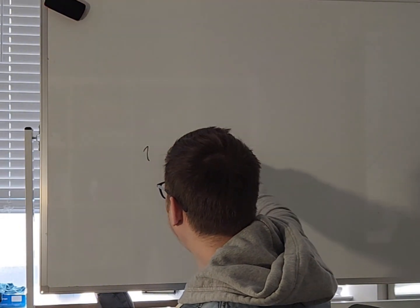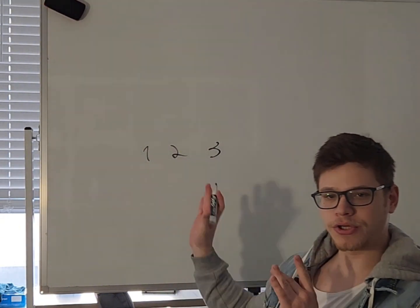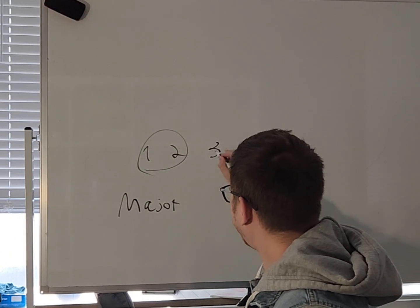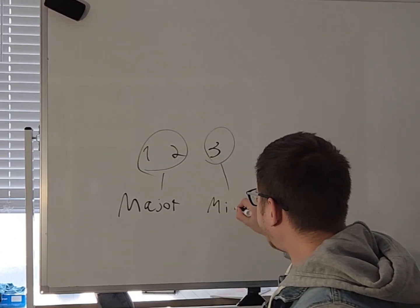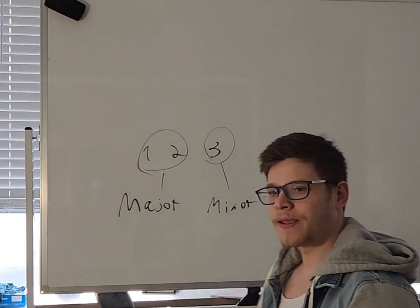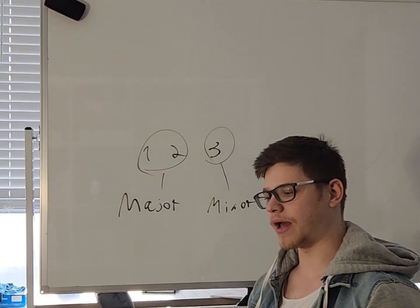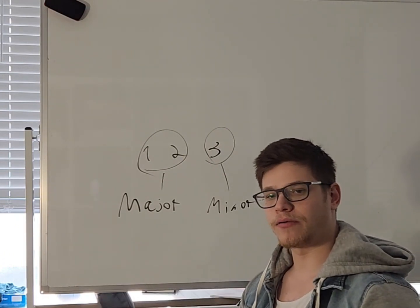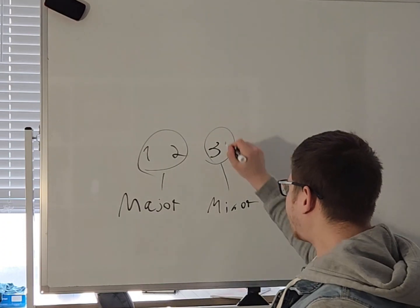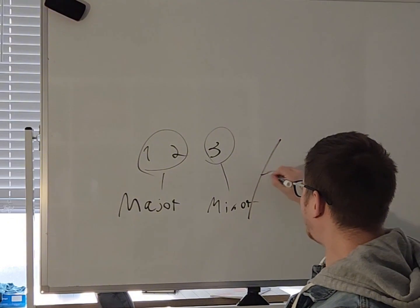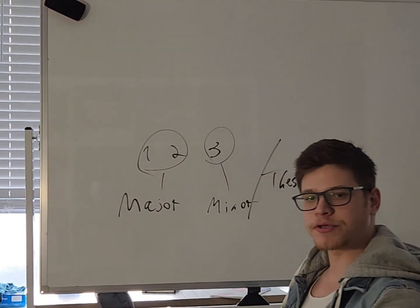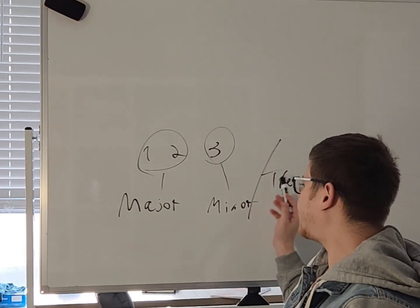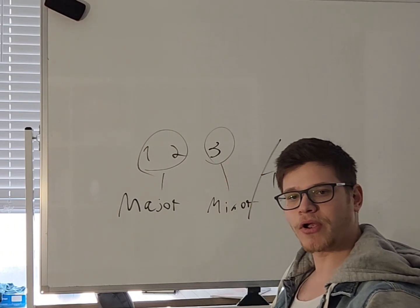There are basically three people on your oral committee, and you get to choose who they are. Two of them are going to be in your major area, and the other one is going to be in your minor. The major is going to be asking most of the questions. Alternatively, you could decide to write a thesis — if you do expository work equivalent to a master's thesis, they actually give you a master's for it, and then you don't have to do a minor on your oral exam, just your major.